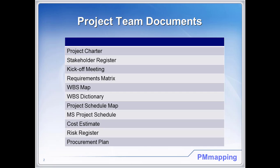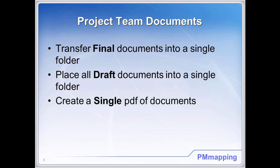The project teams have done a great job in creating the project team documents, including finalizing the project charter, stakeholder register, creating the kickoff meeting agenda, the requirements matrix, the WBS map, the WBS dictionary, project schedule map, MS project schedule, cost estimate, risk register, and procurement plan.